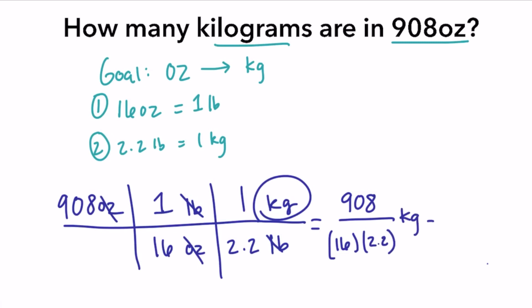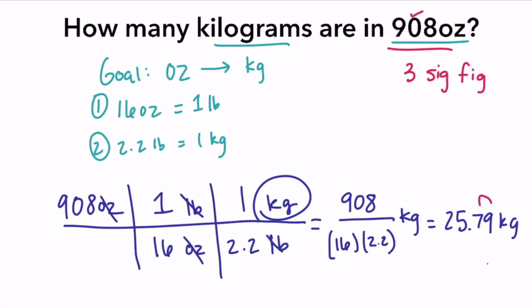Now let's check our significant figures. 908 has three significant figures — that zero is between two significant figures, so it is significant. We round 25.79 to three significant figures. The nine rounds the seven up, giving a final answer of 25.8 kilograms.